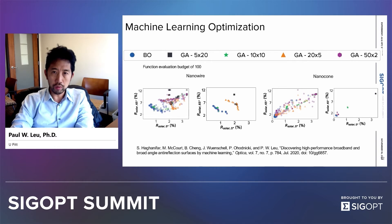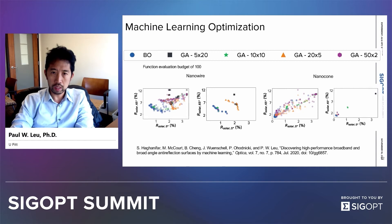The overall evaluation budget in all of these simulations was 100. You can see the difference in performance for the optimization of the nanowires on the left, as well as the nanocones on the right.